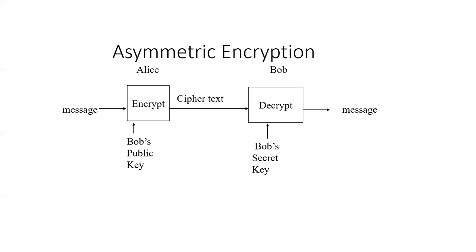In the 1970s, people came up with a solution called asymmetric encryption. The idea is that Bob has a two-part key: a secret key that only he knows, and a public key he can let the entire world know about. Think of it like an email address you share publicly, while keeping your password private. Bob's public key is like his address — he tells the world to send messages there — while his secret key is the password he uses to read them.